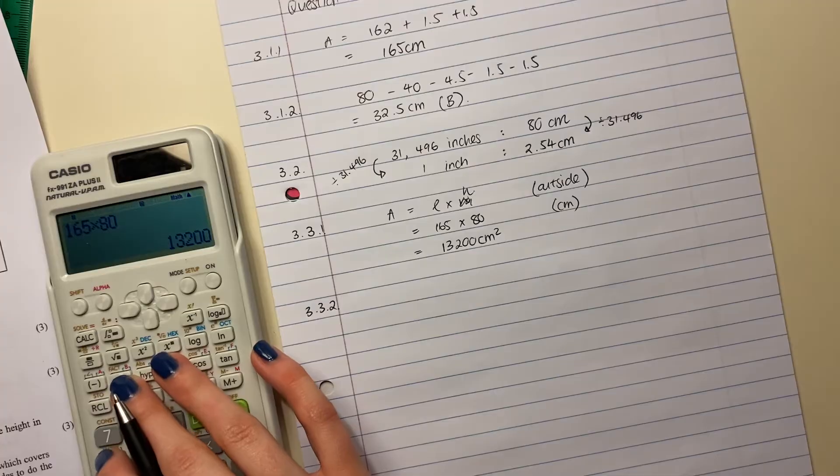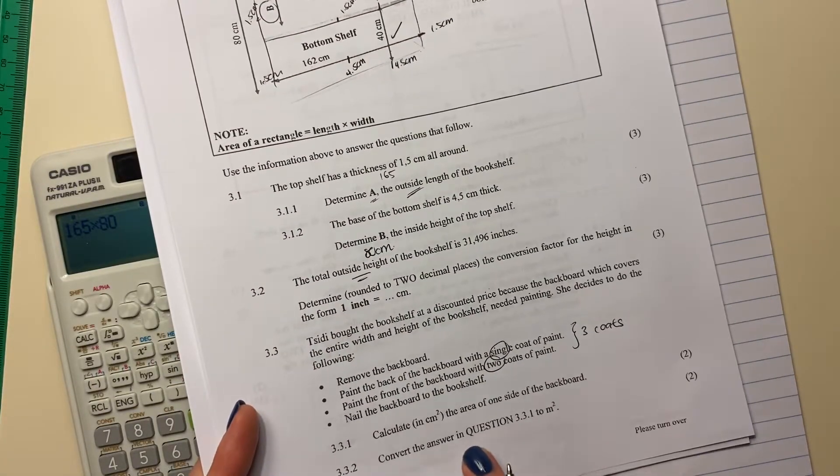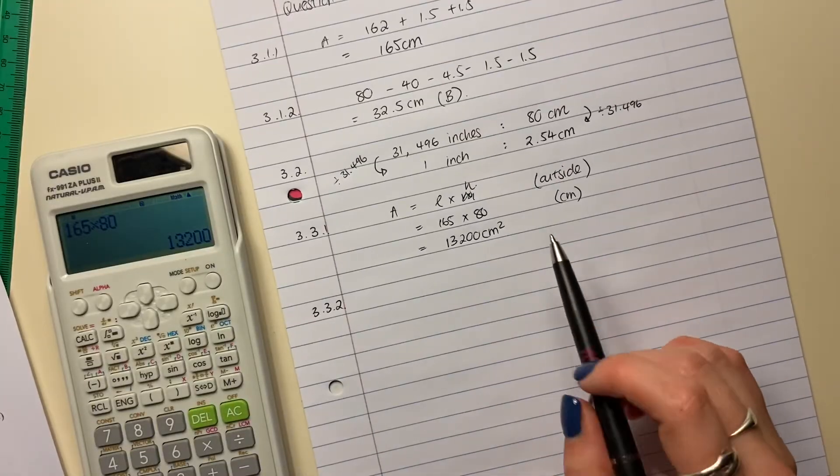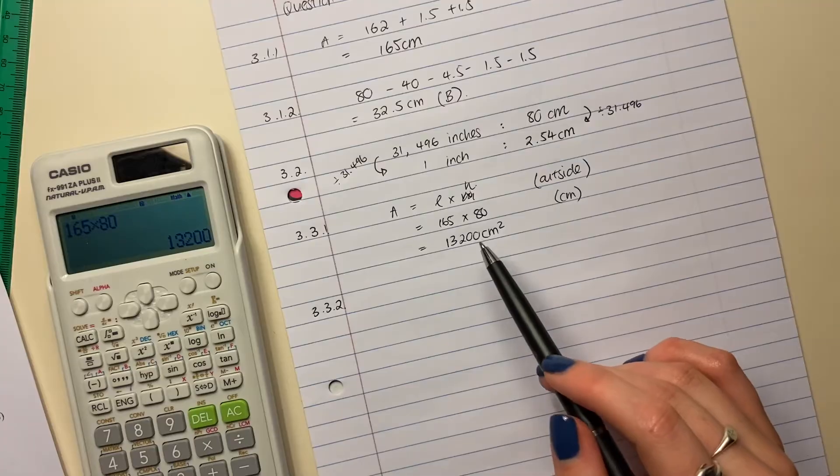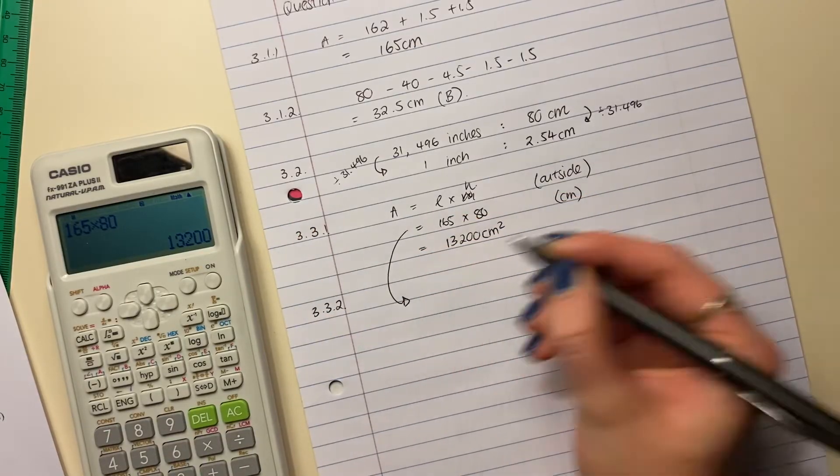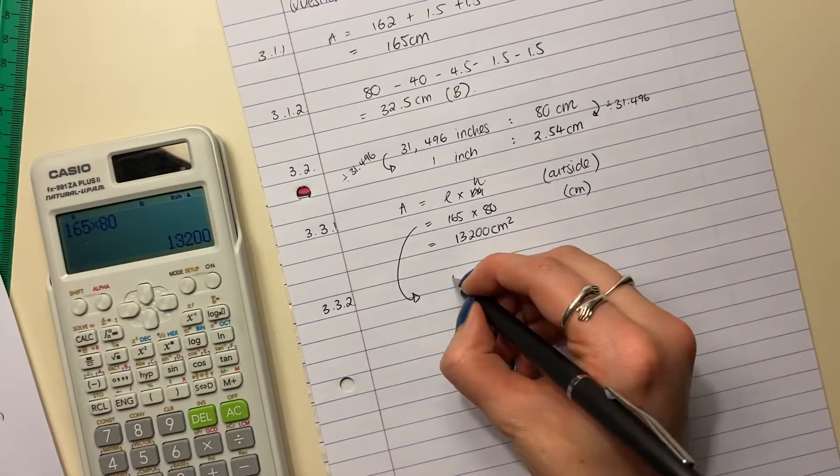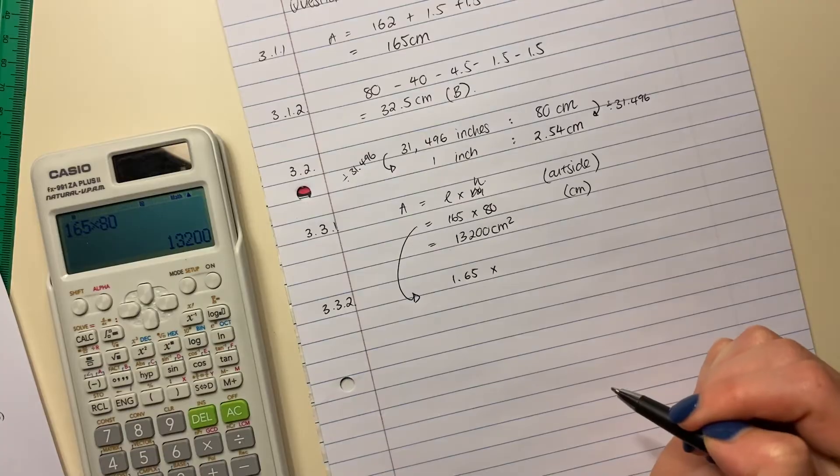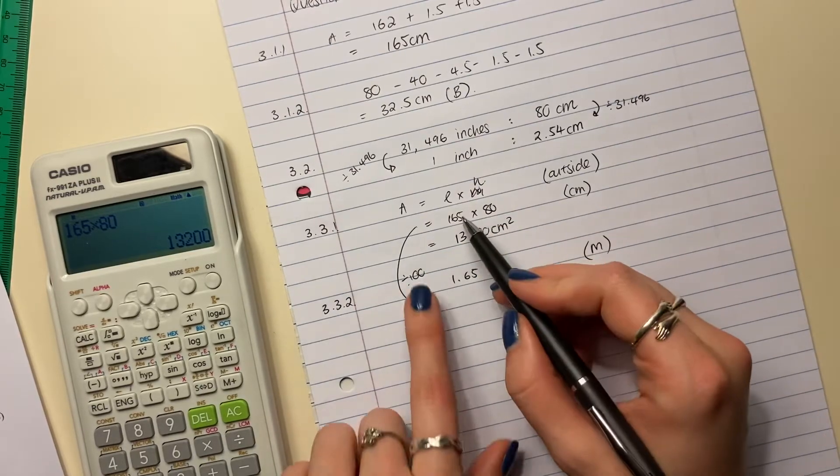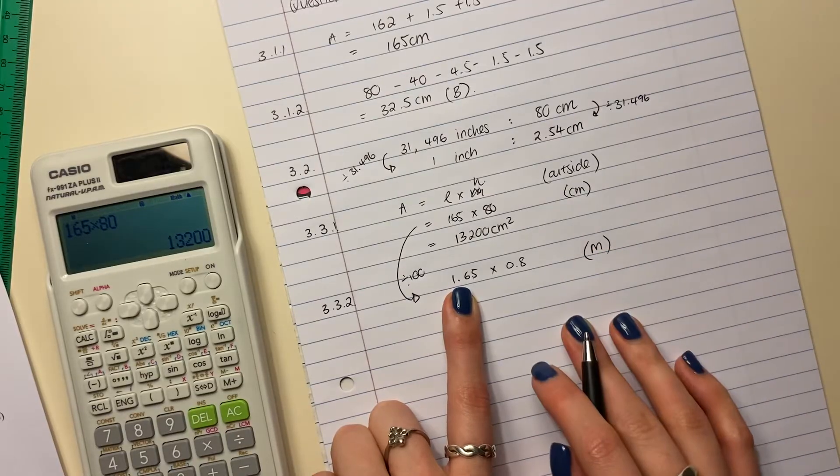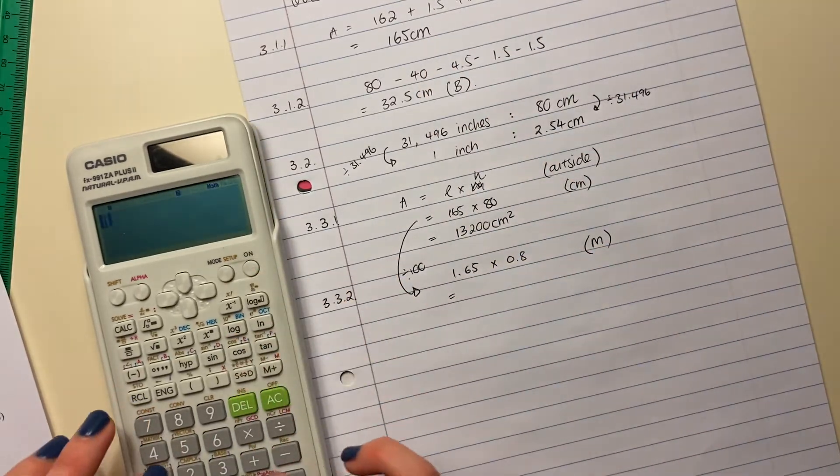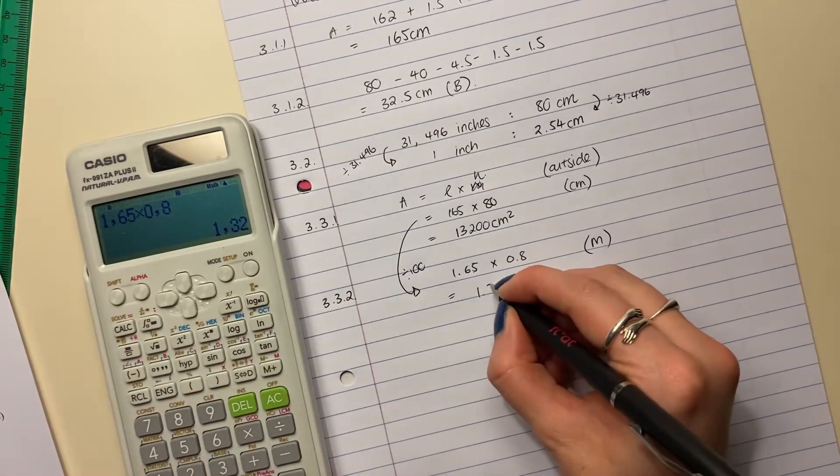Next question is one that students get wrong all the time. It says, convert the answer in question 3.3.1 to meters squared. Now what students do is they're like, oh, there's just 100 centimeters in a meter and they divide this by 100. No. There are two dimensions. Each of those dimensions have to be adjusted to be in meters. So we're going to go from this step here and we're going to say, what is 165 centimeters in meters? Well, it's 1.65. What is 80 in meters? So we've basically gone from centimeters to meters. And to do that, we divide by 100. So you're dividing each of these by 100. So now both of my dimensions are meters. So now you can go calculate the answer. So 1.65 times 0.8. And your answer is 1.32 meters squared.